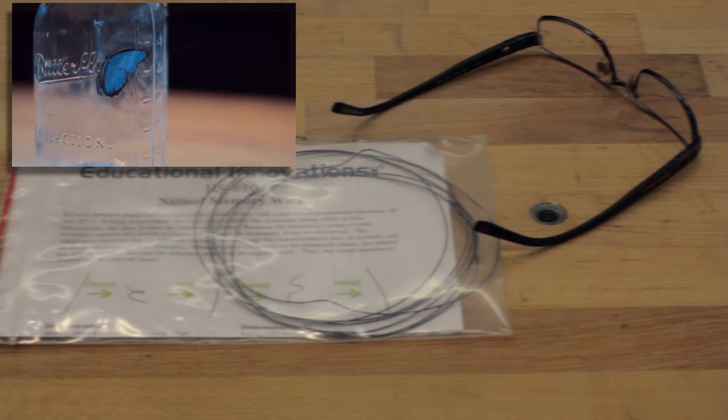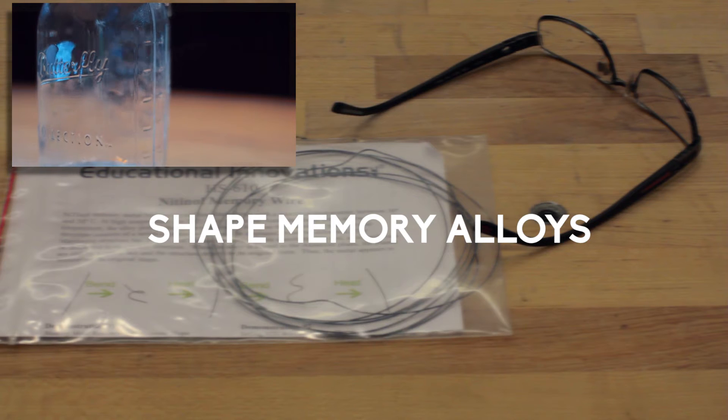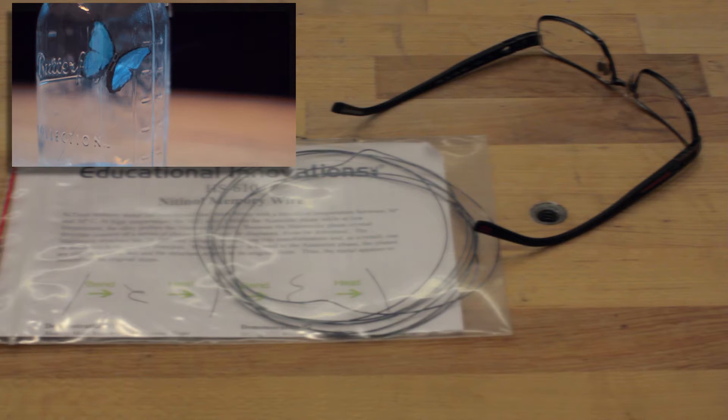This video will explore shape memory alloys, materials with many industrial and research applications, commonly used in everyday life for braces and dentistry, flexible eyeglass frames, and the animated butterfly in a jar.